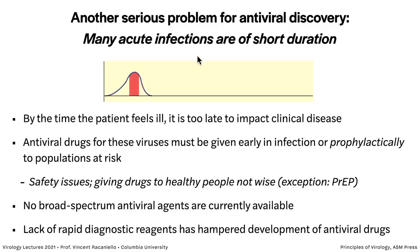Acute infections are short — influenza lasts a week, SARS-CoV-2 about two weeks — and typically by the time you feel ill it's really too late to make a difference. With SARS-CoV-2, when you get symptoms the virus is already at its peak. So you have to give antivirals quite early in infection, which means you need to be able to diagnose quickly. It's a catch-22: companies won't make antivirals without diagnostic tests, and won't make diagnostics without antivirals.